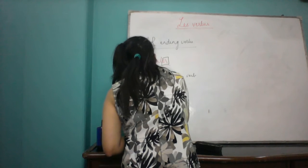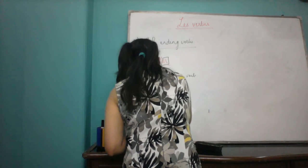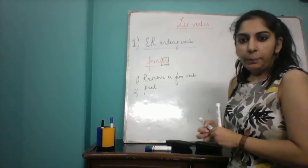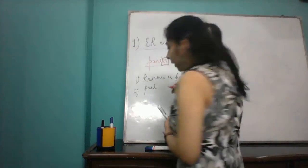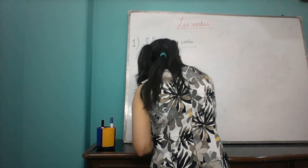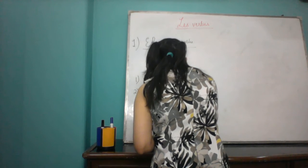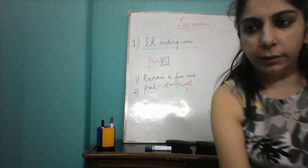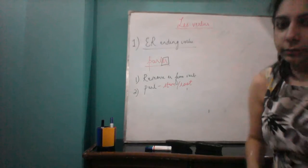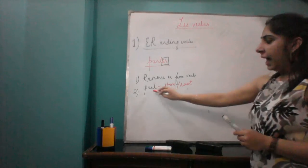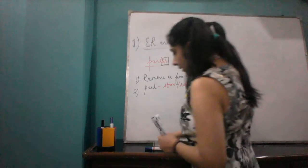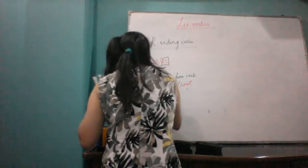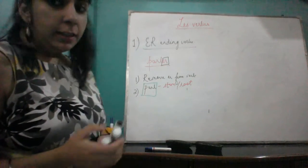Whatever is left — for example, in 'parler' we are left with 'parl' — so 'parl' becomes the stem or the root of the verb. Now using this stem or root, we will conjugate the verb according to all the subjects that we have.